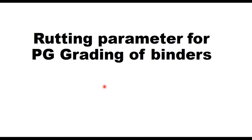Hello friends, today in this session we will discuss rutting parameter for performance grading of binders. PG grading of binders is specified by two temperatures: highest temperature and lowest temperature. For example, a grading of PG 64-10.